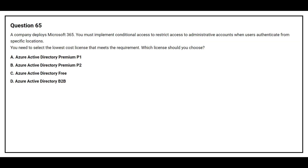Question number 65. A company deploys Microsoft 365. You must implement conditional access to restrict access to administrative accounts when users authenticate from specific locations. You need to select the lowest cost license that meets the requirement. Which license should you choose? Option A: Azure Active Directory Premium P1. Option B: Azure Active Directory Premium P2. Option C: Azure Active Directory Free. Option D: Azure Active Directory B2B.